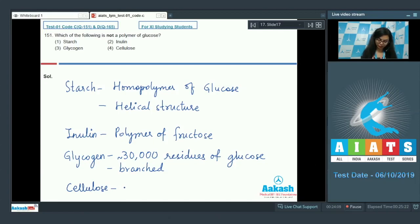Lastly, cellulose is a straight chain linear polymer that doesn't show any branching and is again a homopolymer of glucose, like starch. So the answer here would be option number two, inulin, because it is not a polymer of glucose but of fructose.